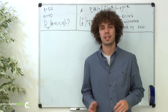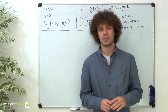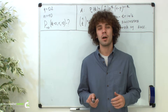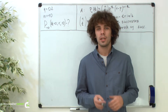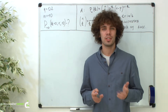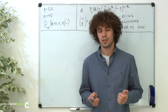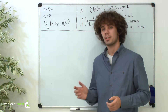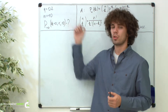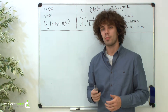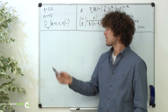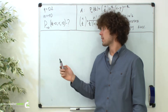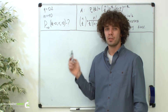Hello, this is Max from Assignment Expert. Today we will consider another example on how to use the Bernoulli formula. Imagine you have a machine that produces some details. The probability that this machine produces a detail with a defect is 0.2. Let's find the probability that out of 10 details produced, there will be exactly k details without defects.